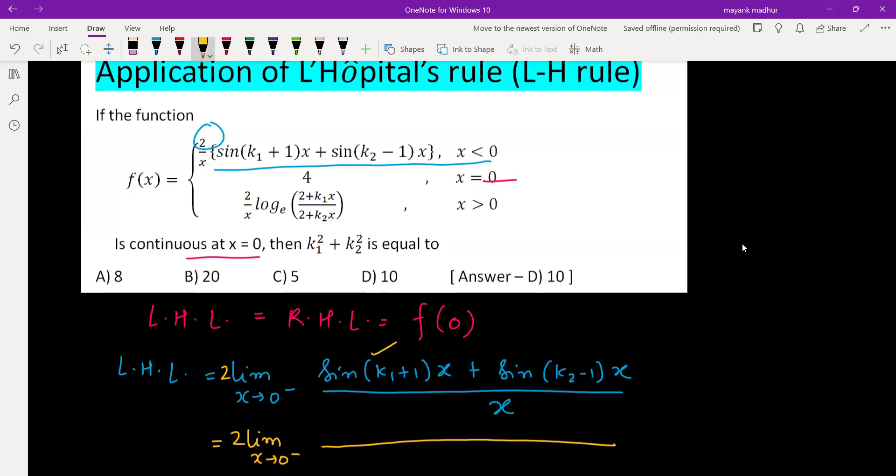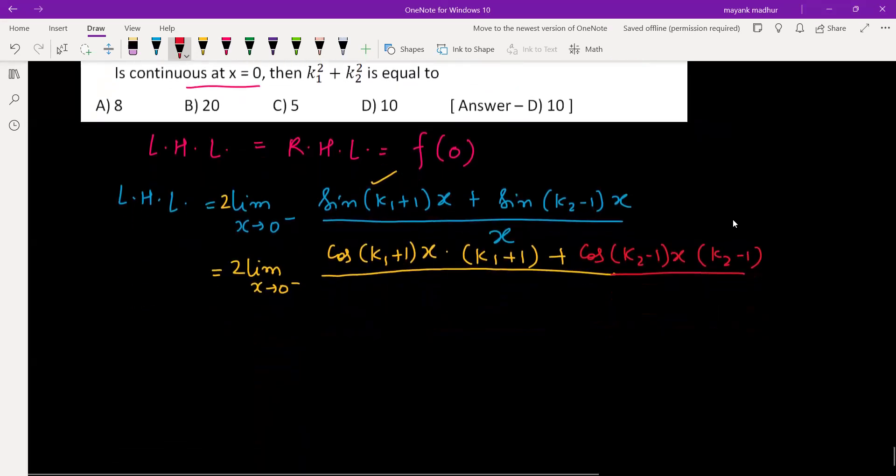So differentiation of sine will be cos(k₁+1)x, and because of chain rule we'll need to multiply by k₁+1. Similarly for the second term also, we'll be writing cos(k₂-1)x multiplied by k₂-1, and differentiation of denominator x will be 1.